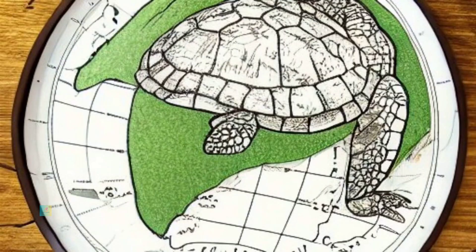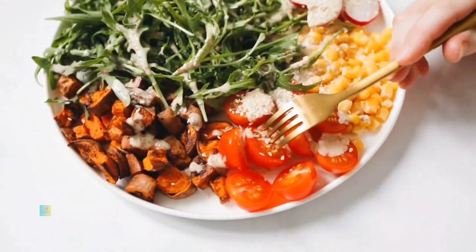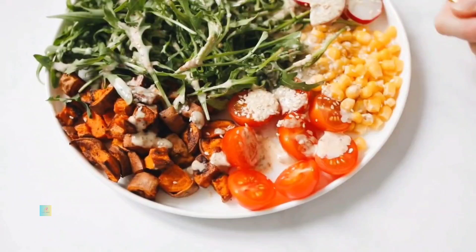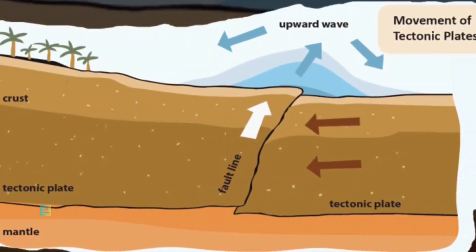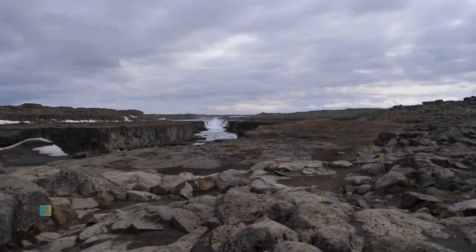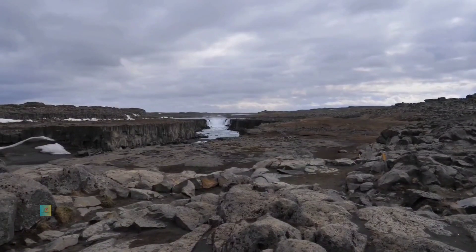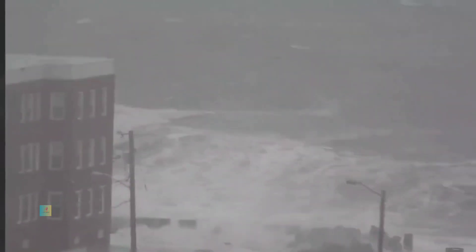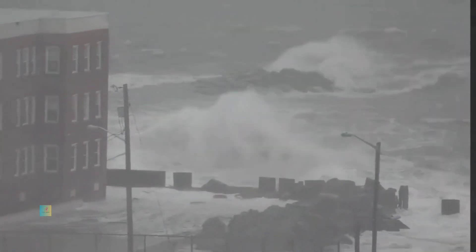Plate Tectonics and Tsunamis: Understanding the dynamics of plate tectonics is crucial to comprehending tsunami formation. The Earth's outer shell, or lithosphere, is divided into tectonic plates that constantly move, interact, and subduct beneath one another. Subduction zones, where one tectonic plate descends beneath another, are frequent locations for powerful earthquakes that can trigger tsunamis. The sudden uplift or subsidence of the seafloor during these events displaces water and generates tsunami waves.